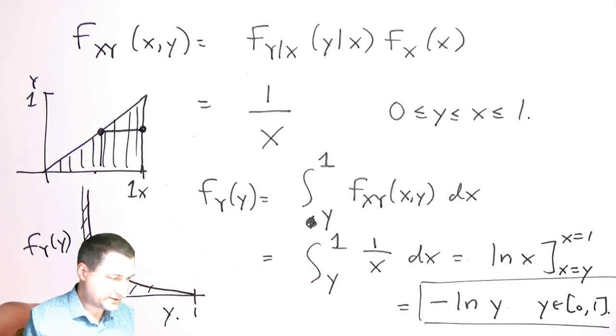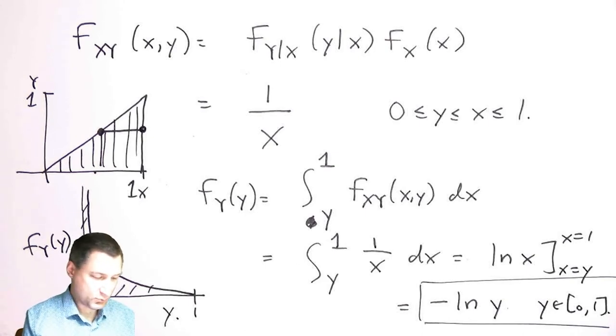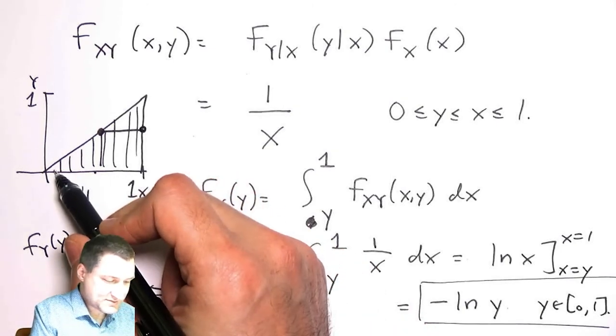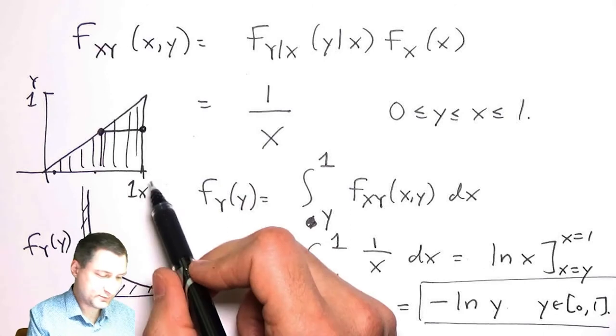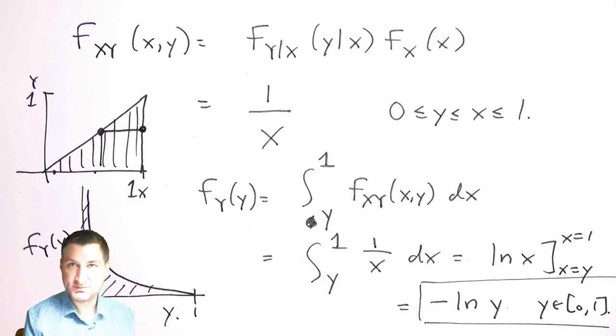I'd have to do the math to convince you that even though this goes up to infinity, the area under the curve is one. But basically it just says that smaller values of Y are more likely than big values of Y. Why is that? Because I can always get a small value of Y no matter what the value of X is, but it's hard for me to get a big value of Y because I would have had to choose a pretty large value of X and then choose a large value in that range zero to X in the first place.